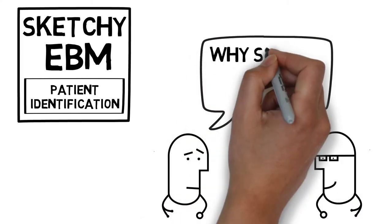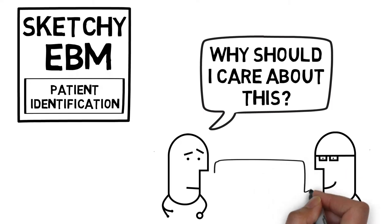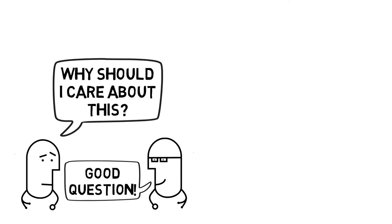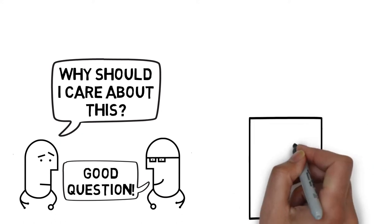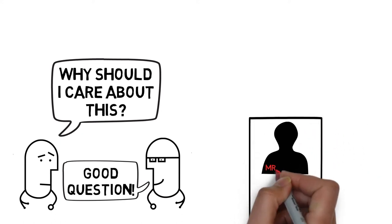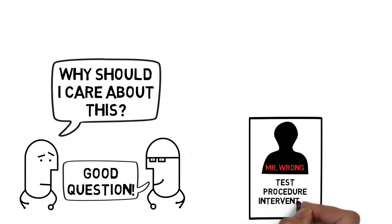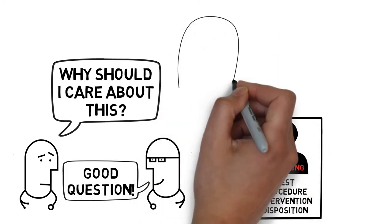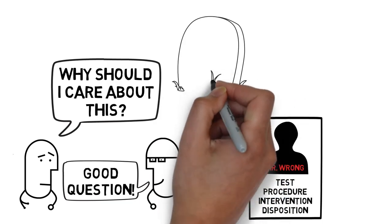You may have asked yourself why this is so crucial in your line of work. One way to answer this question is to think about what happens when a patient is misidentified while we're caring for them. So let's imagine for a minute that our patient, Mr. Wrong, is given the wrong care activity, which could include a test, a procedure, an intervention, or a disposition. The most severe and important outcome that can result from the wrong patient receiving a care activity not intended for them is actual physical harm.